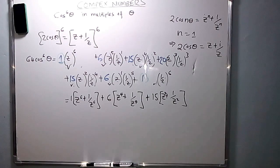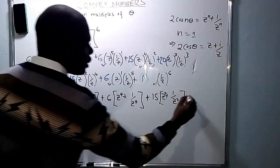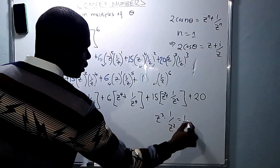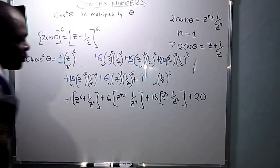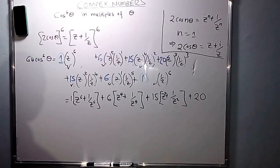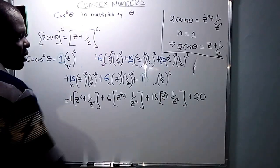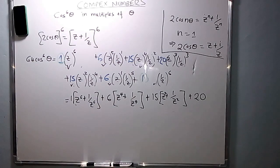The term without a matching pair — with coefficient 20 — is always the constant term. Z raised to power 3 times 1 over z raised to power 3 equals 1, so you end up with just plus 20. The terms always pair as doubles, and the one without a partner to double with is a constant.